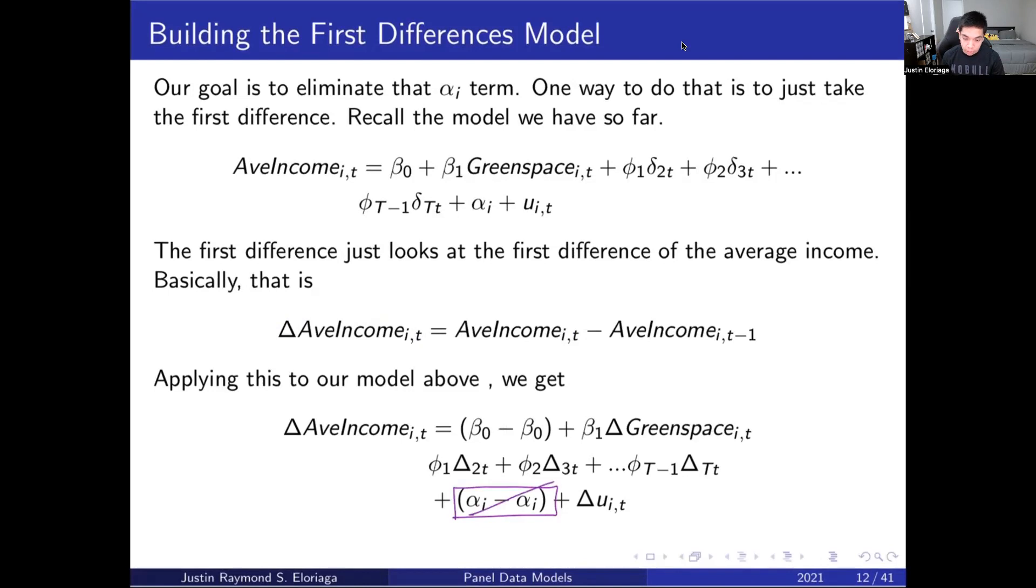So that alpha_i term will go away, but one thing that will also disappear is that beta_0 term because beta_0 is also not a function of t, so that will also go away. So we're going to get to a new model specification, one that involves differences.